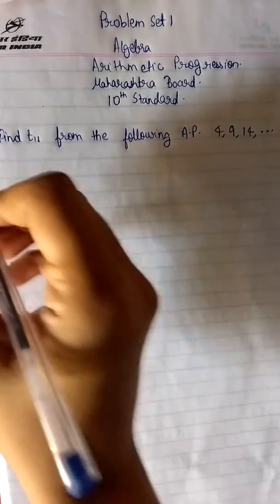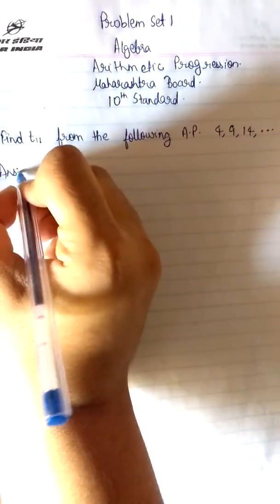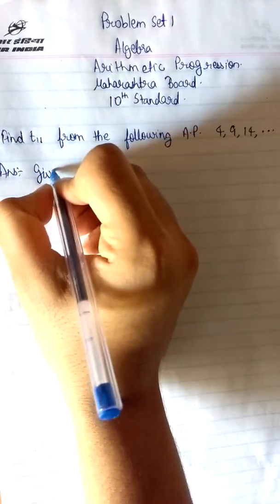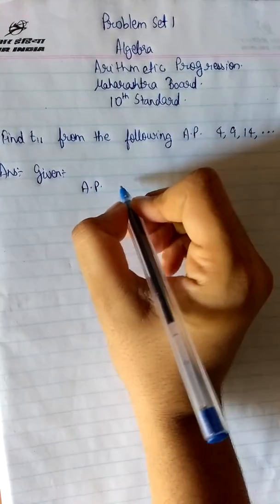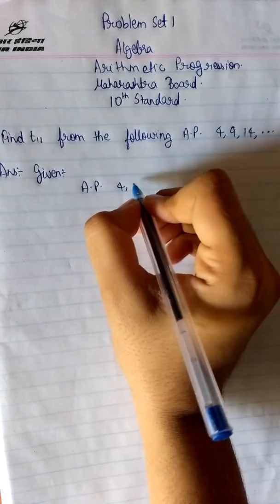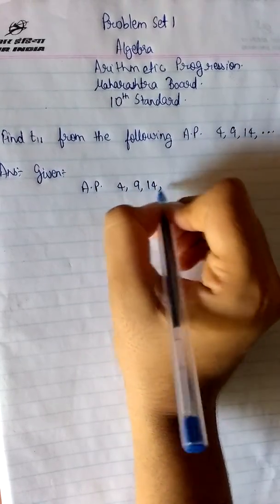So for any maths question, first we write the given information. So the one that is given to us is the AP. AP that is 4, 9, 14 and so on.